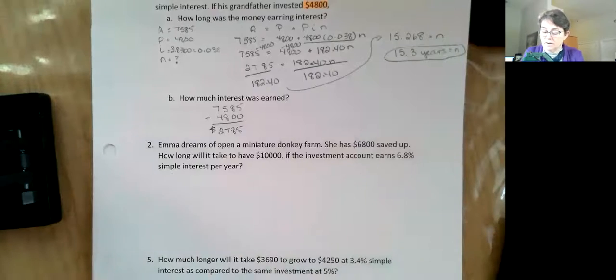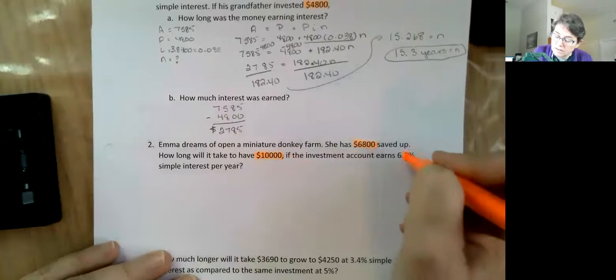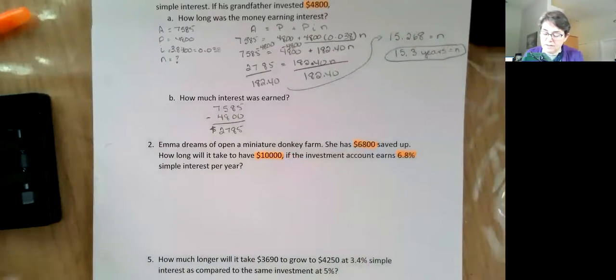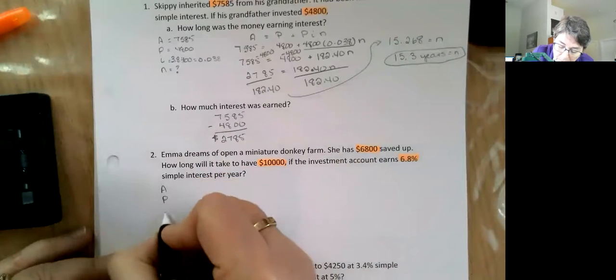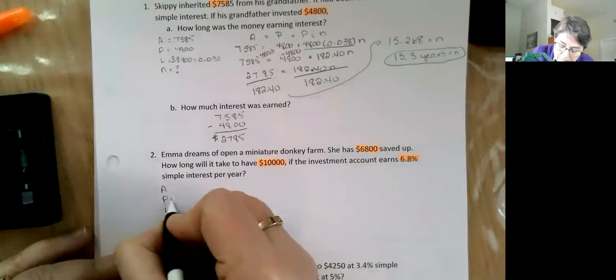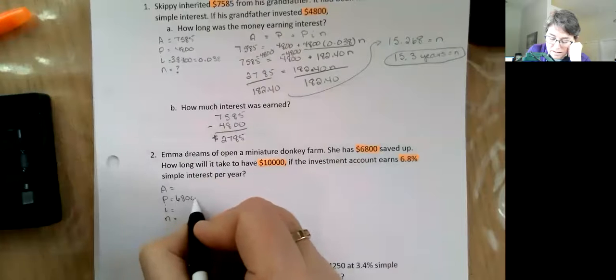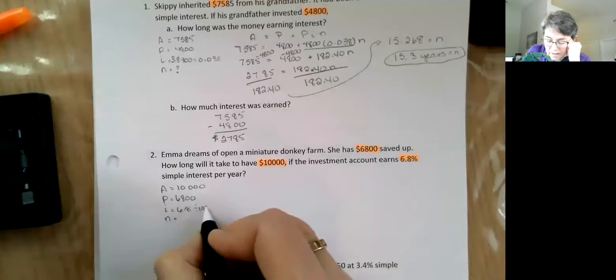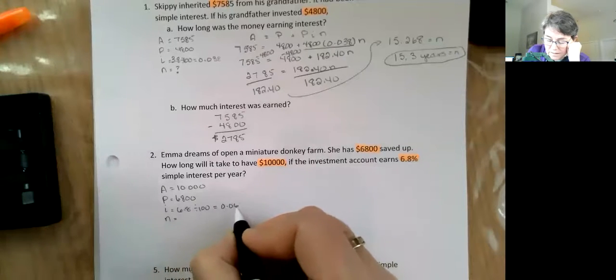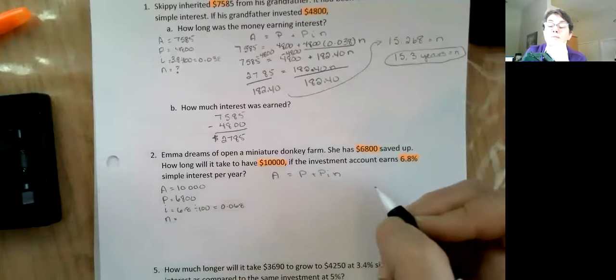Emma dreams of opening a miniature donkey farm. She has $6,800 saved up. How long will it take to save $10,000? It is 6.8% simple interest per year. Well, I think you already know it's going to take a while because simple interest does not increase very fast. $6,800, that's what she started with. She wants $10,000. And my interest is 6.8 divided by 100, 0.068. So A is equal to $10,000.